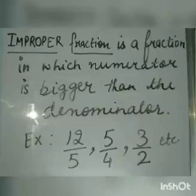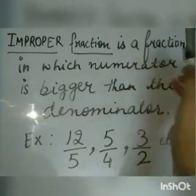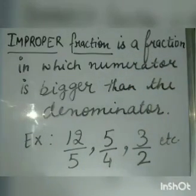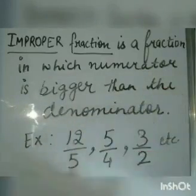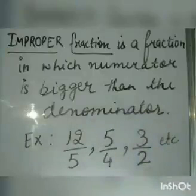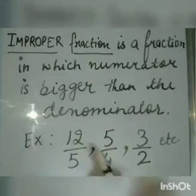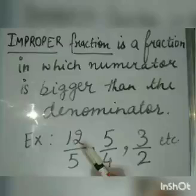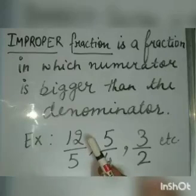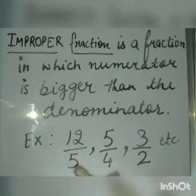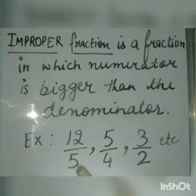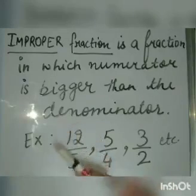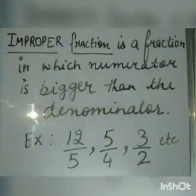Improper fraction. An improper fraction is a fraction in which the numerator is bigger than the denominator. For example, 12 upon 5. The number above the line is the numerator and the number below the line is the denominator. Numerator 12 is greater than the denominator 5, so this is an example of an improper fraction.